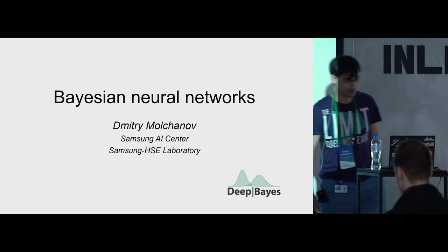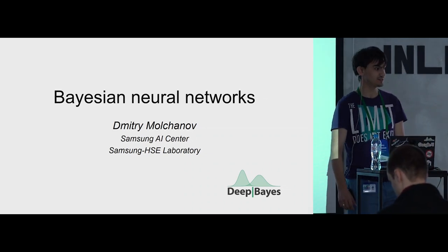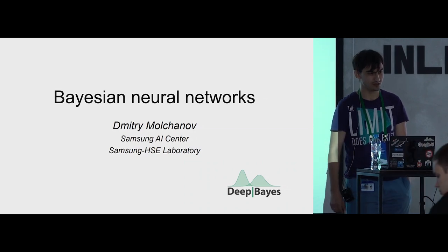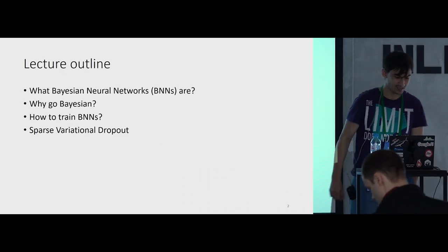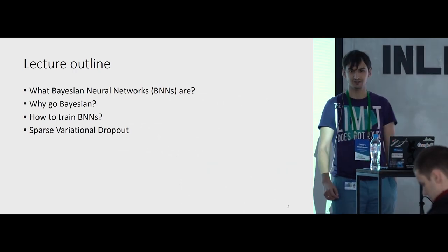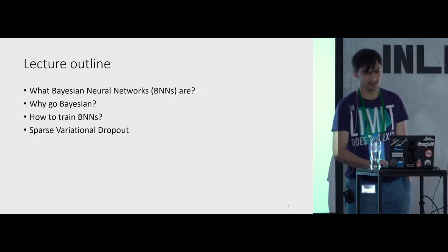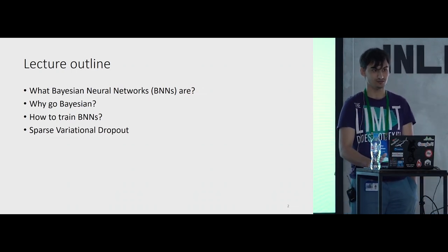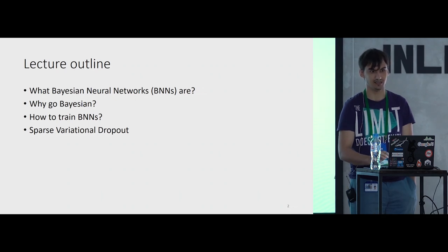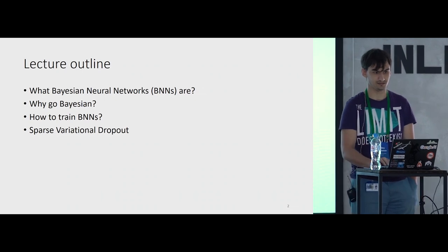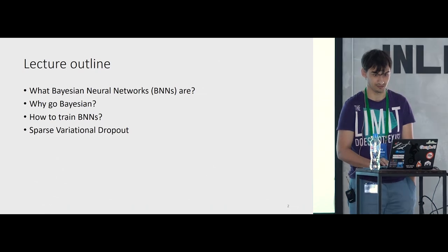During the first talk, I'll talk about Bayesian neural networks. We are at a deep Bayes summer school, so finally it is time to talk about Bayesian neural networks. On this lecture, I'll tell you what Bayesian neural networks are, what are the benefits of going Bayesian in deep learning, how to train them, and finally, I'll finish with one specific example — sparse variational dropout — which you will implement yourself at the seminar.